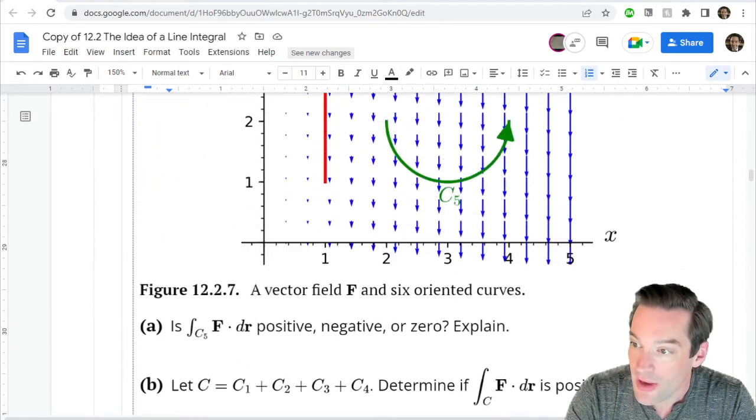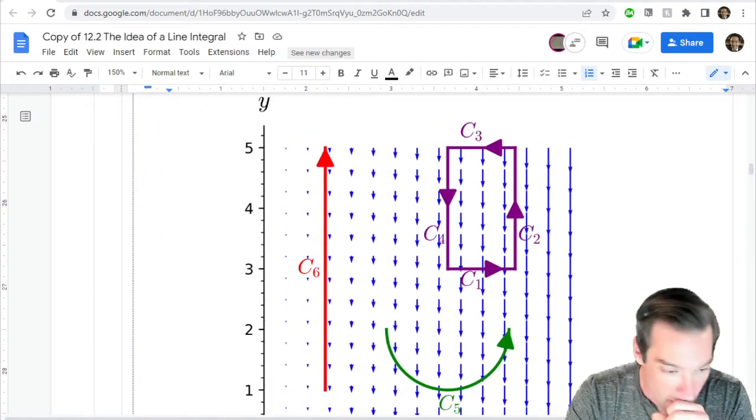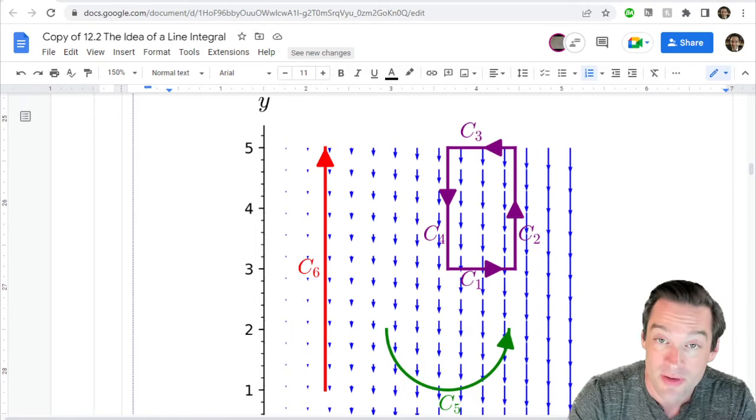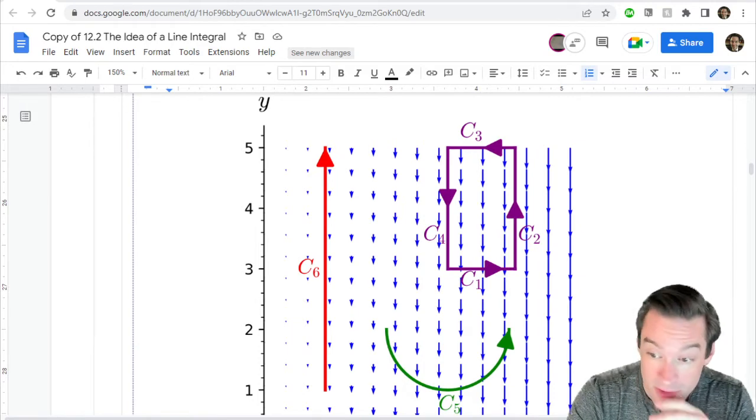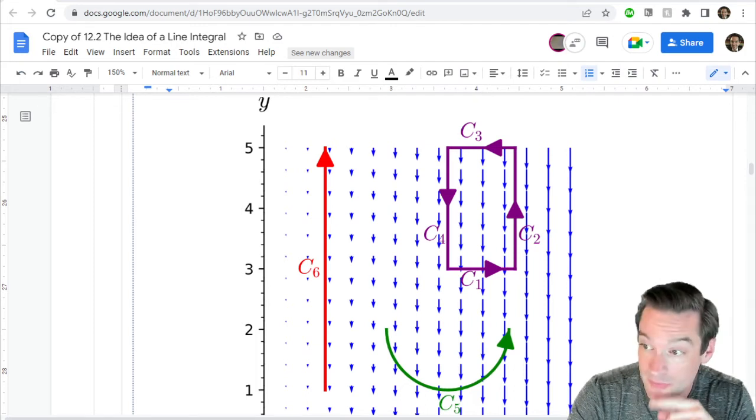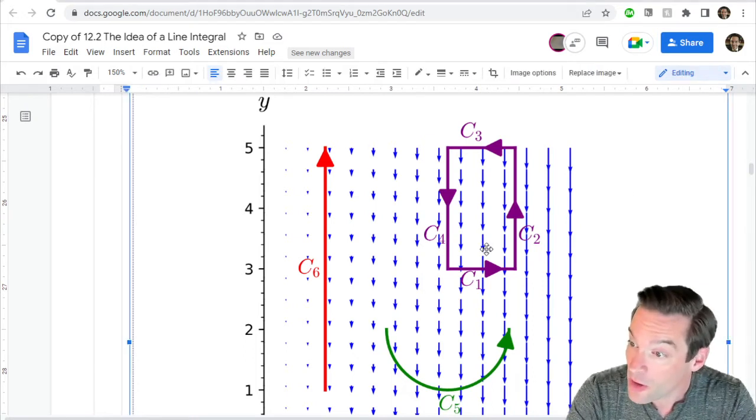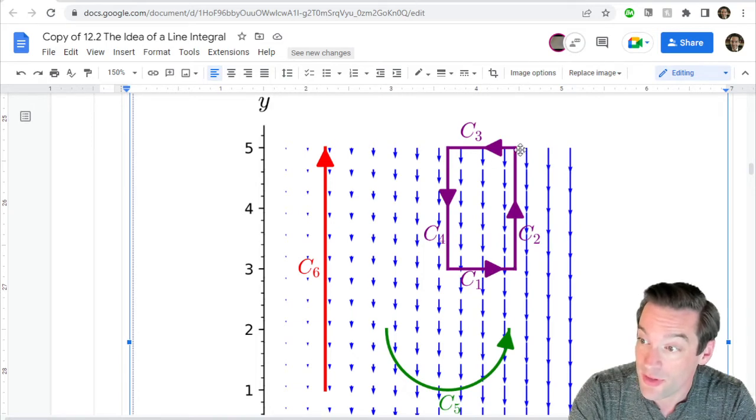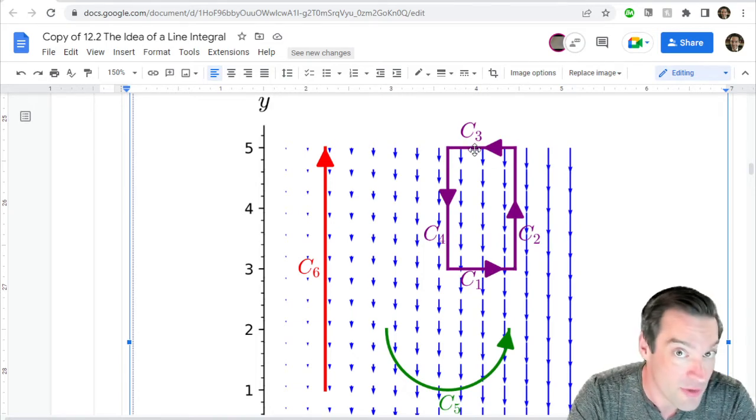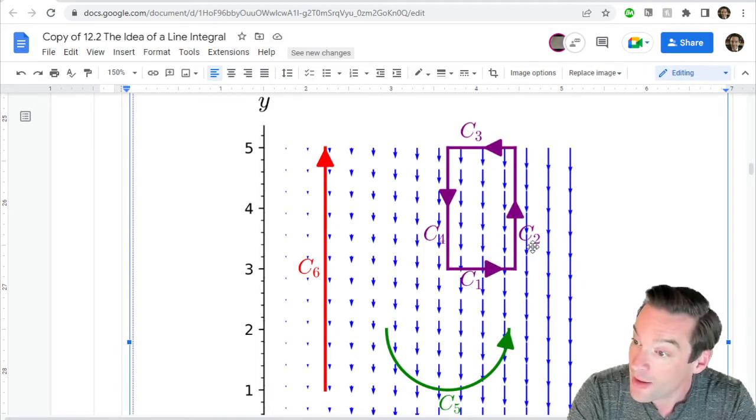So you figured out here that of the six different path integrals that are shown here, only one of them ends up being positive. That's the C4 integral, where we're clearly moving in the parallel direction to the vector field along C4. For all of the other examples, we get either zero in the case of the C1 and C3 paths, which are both perpendicular to the vector field at every stage, or negative.